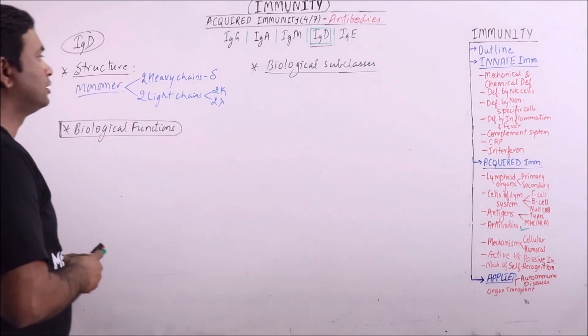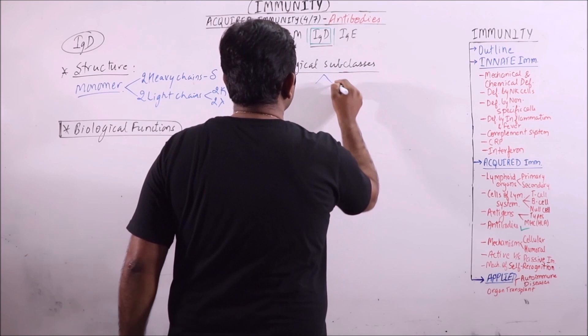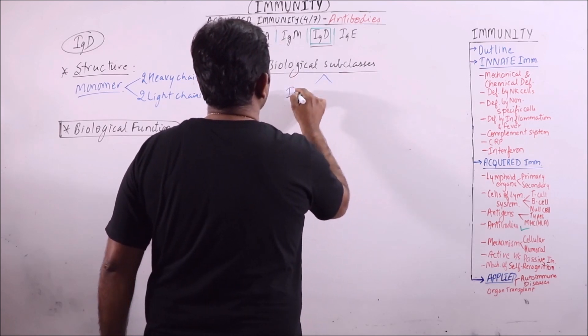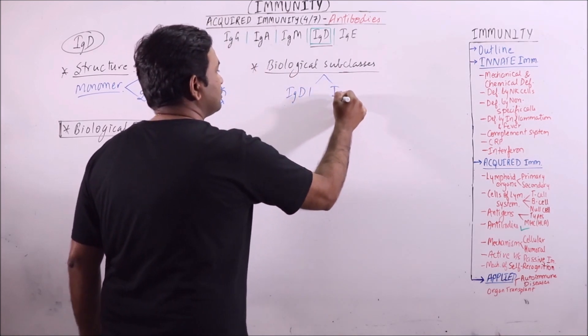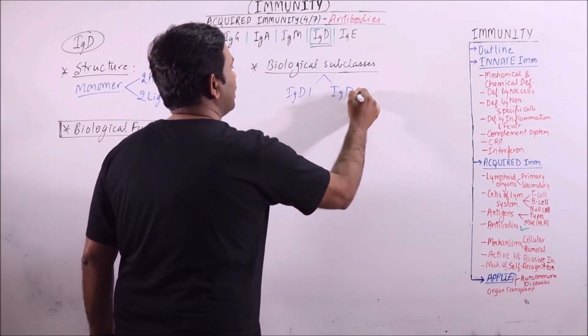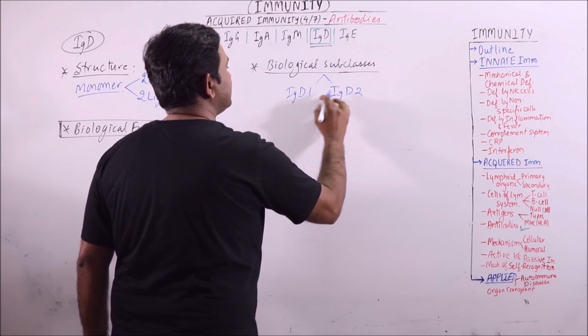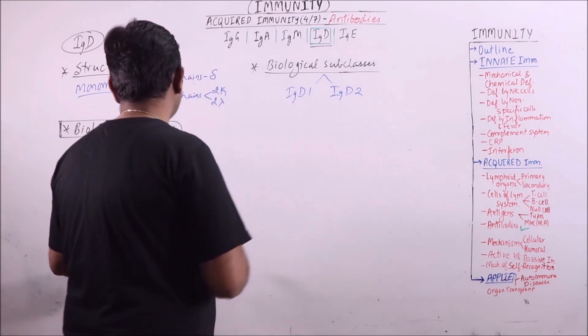The biological subclasses are 2: IgD1 and IgD2.